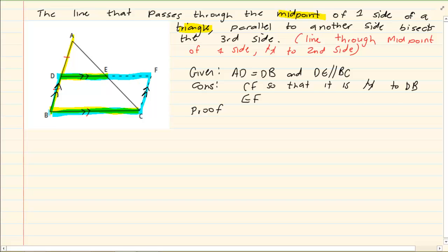You can see that since CF is parallel to BD and it's given that DE is parallel to BC, we know that DBCF is a parallelogram. And why are we going to say that?